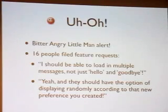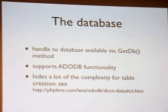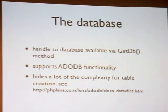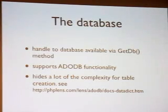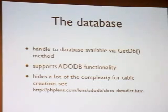16 people file feature requests: they want to be able to fill in their own messages. And if you have this preference established for randomly picking a phrase, you ought to use it for something. So this brings up the database. The handle to the database is available via the getDB method. This supports all of the ADODB functionality, which is a database abstraction layer. Here's a link to the documentation — it's a cluttered and difficult to navigate, but it's quite complete and really very helpful.